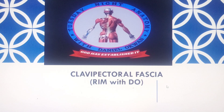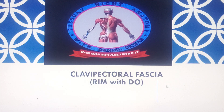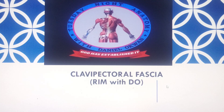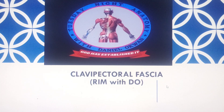An inferior extension of this clavipectoral fascia forms the suspensory ligament of the axilla, which attaches to the deep fascia of the floor of the axilla. When this clavipectoral fascia contracts and pulls on that suspensory ligament of the axilla, the axillary region takes on a dome-shaped appearance.